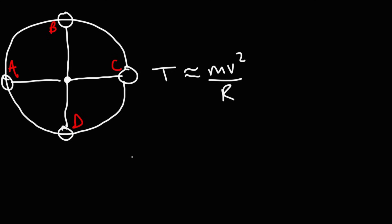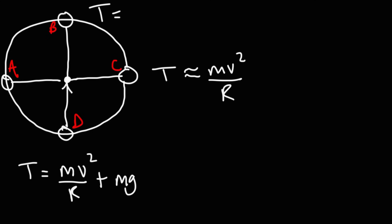At point D, the bottom of the vertical circle, the tension force is going to be the sum of the centripetal force and the weight force, because the rope has to support the weight of the object and also provide the centripetal force to turn it. At point B, the top of the circle, the tension force is the weakest — it's the difference between mv²/r and the weight force. So at point D, the tension force is at a maximum, and at point B, it is at a minimum.